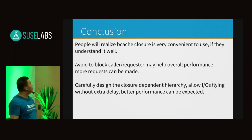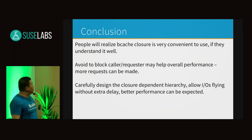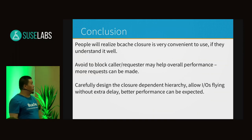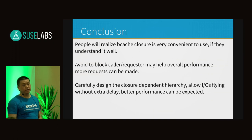Conclusion: People will realize bcache closure is very convenient to use if they understand it well. Avoiding blocking the caller/requester may help overall performance because more requests can be generated. By carefully designing a closure dependency hierarchy, I/O can fly without extra delay and better performance can be expected. Thanks for your attention.